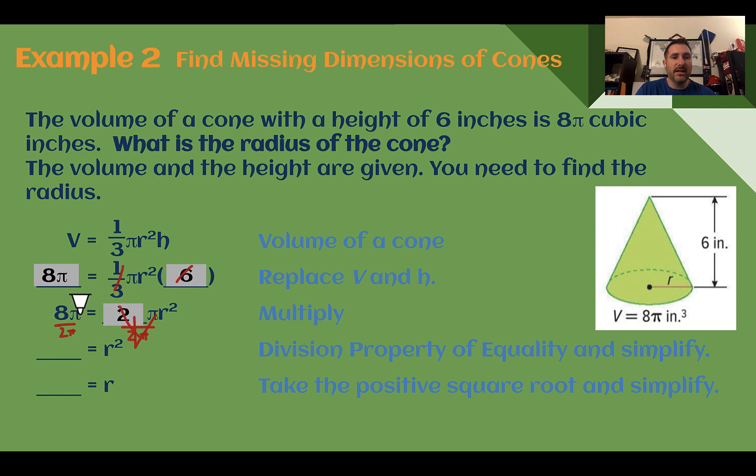Dividing both sides by 2 and pi, that completely cancels on that side. Pi cancels. 8 divided by 2 is 4. 4 is equal to what times itself? That must be 2. Take the square root of it. The radius is 2 inches.